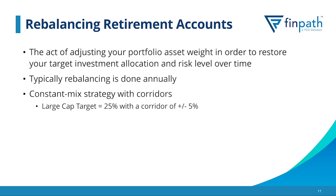We can rebalance in a couple of ways. One is on a timetable — some folks choose to do it monthly, some quarterly, some annually. The other option is a constant mix strategy with corridors. For example, if my large cap exposure target was 25% of my overall allocation and I gave myself a corridor of plus or minus 5% — meaning I was okay with it going down to 20% or up to 30% — if it fell outside of that range, that's when I would rebalance my portfolio to get back to the target of 25%.